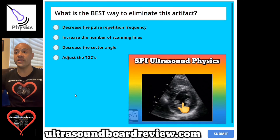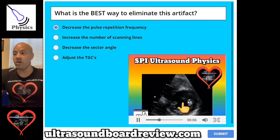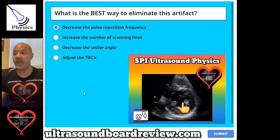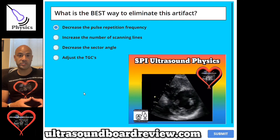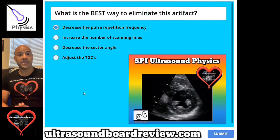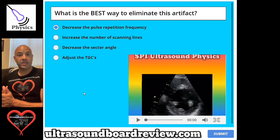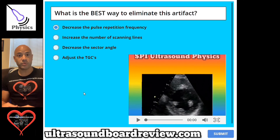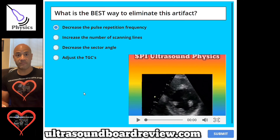The answer is A, decrease the pulse repetition frequency. This is called a range ambiguity artifact, and it occurs when deep reflections return to the transducer after a second pulse was created. The ultrasound system will think those deep reflections came from the second pulse and will place them in a more shallow region. The best way to eliminate this artifact is by decreasing your PRF, because your PRF is too high.